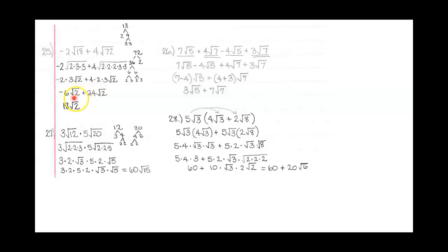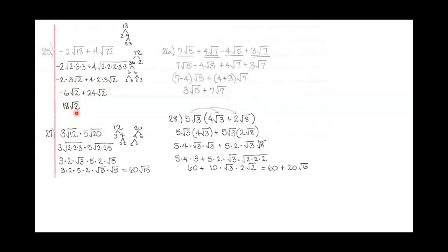Now if you'll notice, I do have like terms, because my radical is exactly the same — square root of 2 and square root of 2. So I'm going to combine my coefficients: negative 6 and 24 gives me 18, and then I keep the square root of 2 exactly the same.